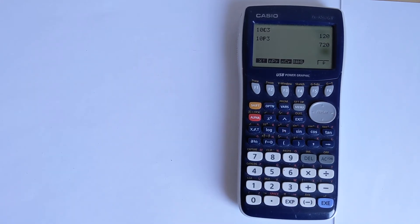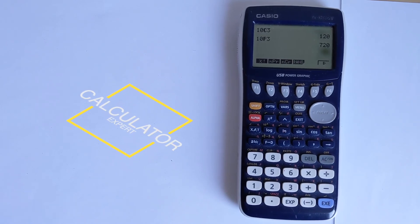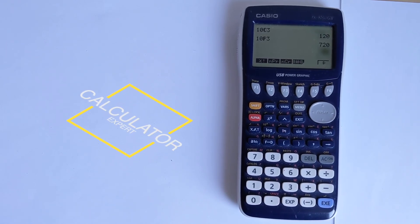So that's how you do combinations and permutations on your Casio graphing calculator. If this was helpful to you, please like and subscribe below, and thank you very much for watching.